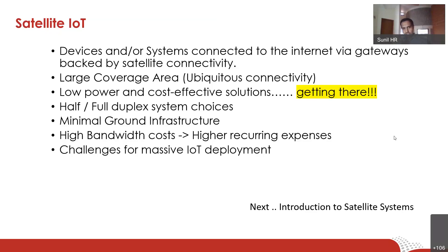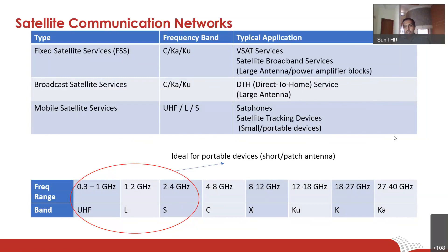For massive IoT deployments, the challenges for satellite IoT are multifold — coverage areas have increased so much that you need to address many more devices than what a satellite IoT system can handle. Before getting into the current scenario, let me give a brief introduction to satellite systems. When we say satellite communication, since IoT devices are communication devices, we have information exchange — both transmit and receive. Satellite communication networks fall under three broad categories: Fixed Satellite Service (FSS), Broadcast Satellite Service, and Mobile Satellite Service.